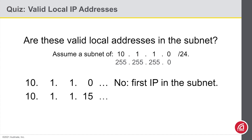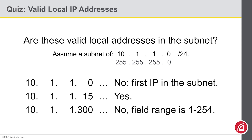How about 10.1.1.15? Yes, that is totally fine. How about 10.1.1.300? This should be a pretty obvious no. The range of IP addresses in dotted quad form have to be 0 to 255, but of course the range of IP addresses we can use would be 1 to 254.